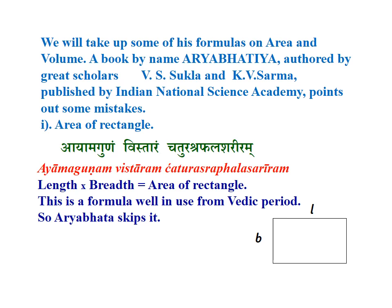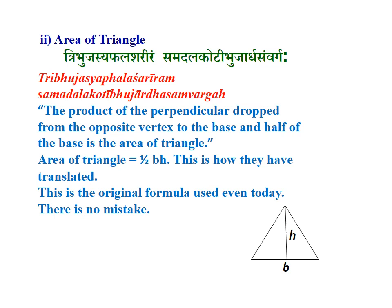We will take up some of his formulas on area and volume. A book authored by scholars V. S. Shukla and K. V. Sharma, published by the International Science Academy, points out some mistakes. The area of a rectangle: 'Ayatam agunam vistaram cadurashrabhala shariram' — length into breadth is equal to the area of the rectangle. This formula has been in use from the Vedic period, so Aryabhata skips it.